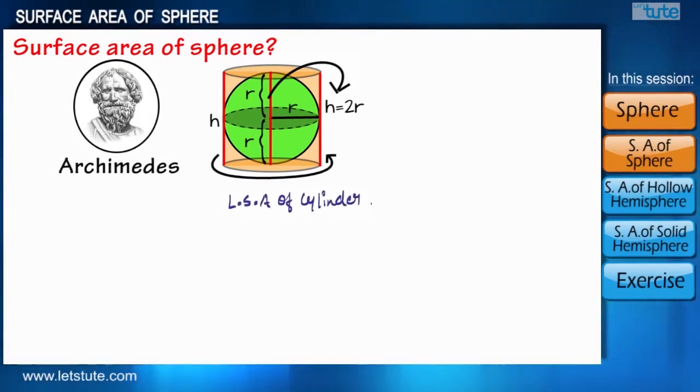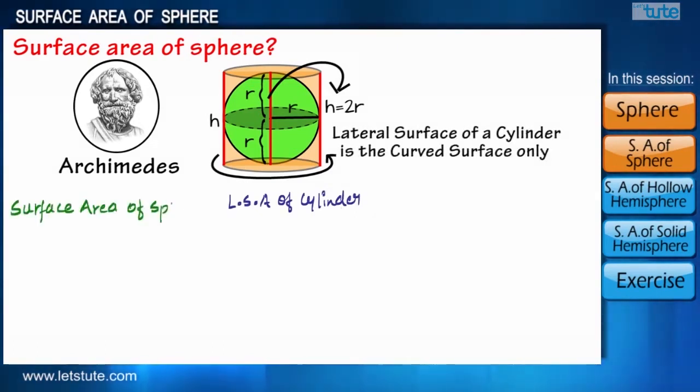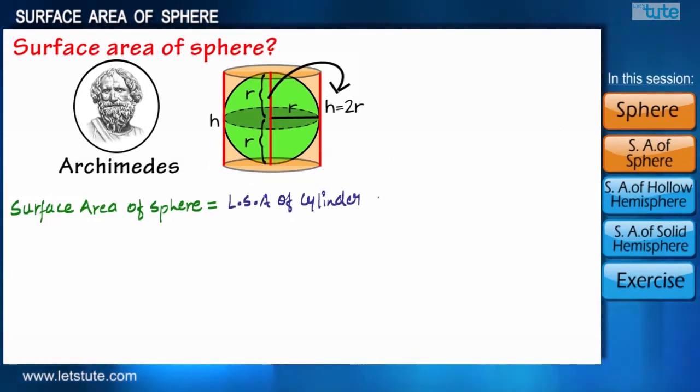We know that the lateral surface area of a cylinder is 2πrh, where r is the radius and h represents the height of the cylinder, which can also be replaced by the diameter of the sphere, and hence it can be written as 2 times radius. Thus, the surface area of a sphere is derived as 4 times πr².